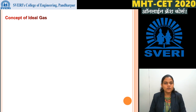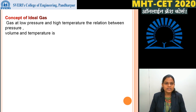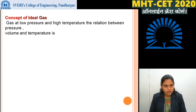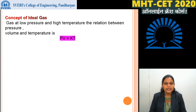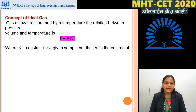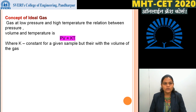The first point is Concept of Ideal Gas. Gas at low pressure and high temperature — the relation between pressure, volume and temperature is PV = KT. We know the ideal gas equation: the relation between pressure, volume and temperature is PV = KT, where K is constant for a given sample but varies with the volume of the gas.